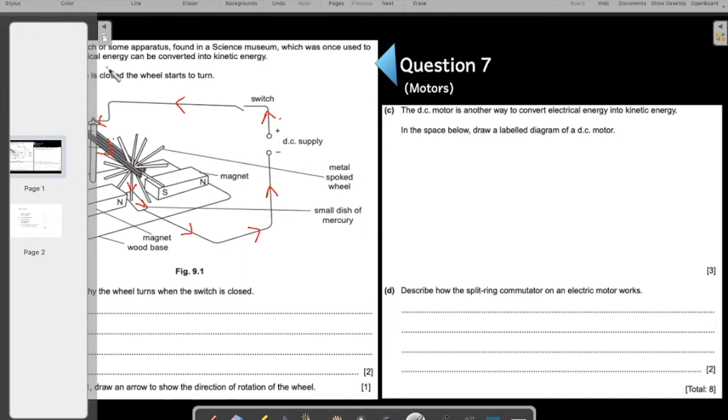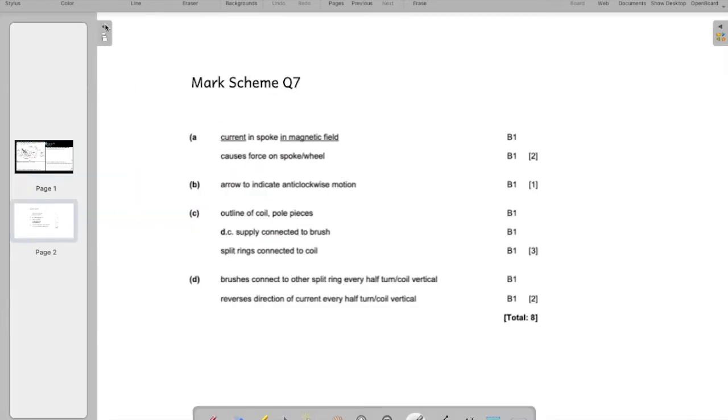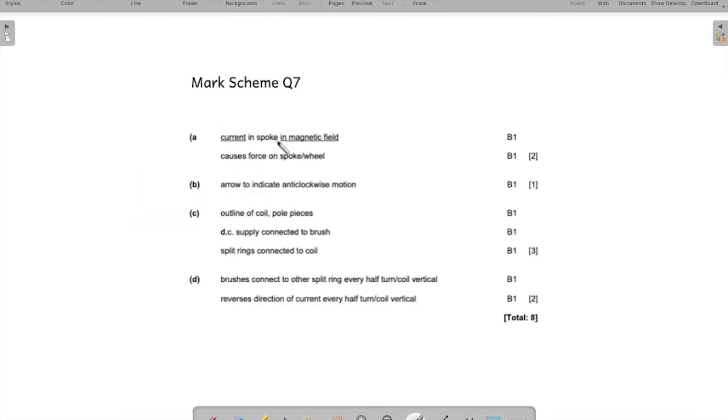So let us look at the mark scheme. There is current in the spoke in the magnetic field. So what can you see? Current in a current carrying conductor in the magnetic field which causes force on the wheel.